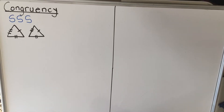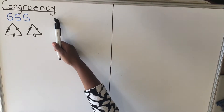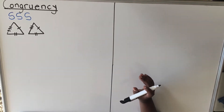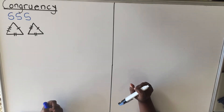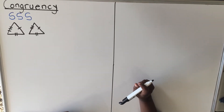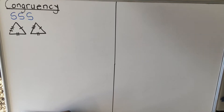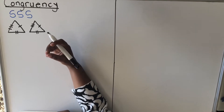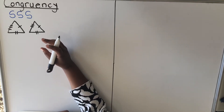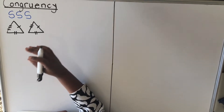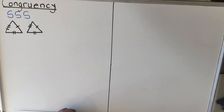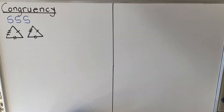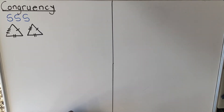This is a lesson on congruency. Congruency means two things that are exactly the same. In this lesson we're talking about shapes, specifically triangles. When we say two triangles are congruent, we mean those two triangles are exactly the same — if you cut one and put it on top of the other, it will fit exactly. Congruency for triangles has four conditions.